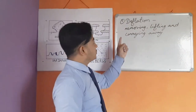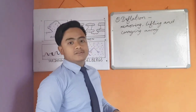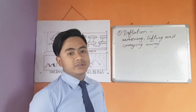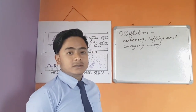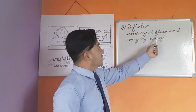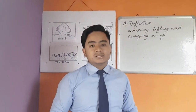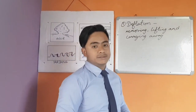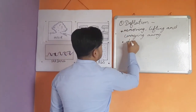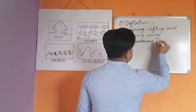Wind erosion takes place in three ways: deflation, abrasion, and attrition. Deflation is the process of removing, lifting, and carrying away dry and unsorted dust particles by the action of wind. Wind deflation forms depressions called blow-outs.